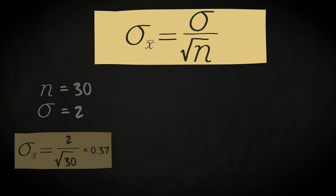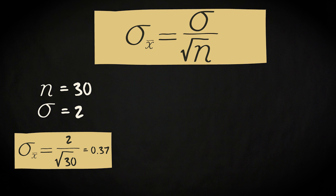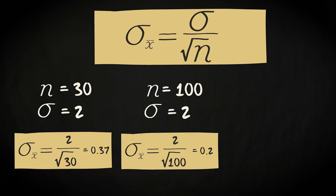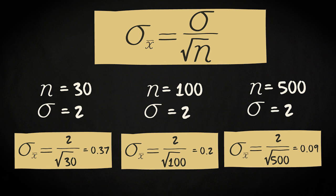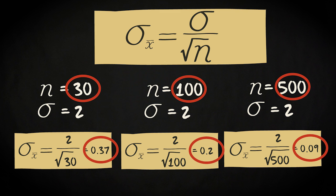The standard deviation of the sampling distribution is also affected by the sample size. Assume that the population standard deviation equals 2. If you have an n of 30, your sigma x-bar equals 2 divided by the square root of 30, which is 0.37. If you have an n of 100, the standard deviation of your sampling distribution becomes 2 divided by the square root of 100, which equals 0.2. If you have an n of 500, your sigma x-bar becomes 0.09. This indicates that a larger sample size leads to a lower standard deviation of the sampling distribution.